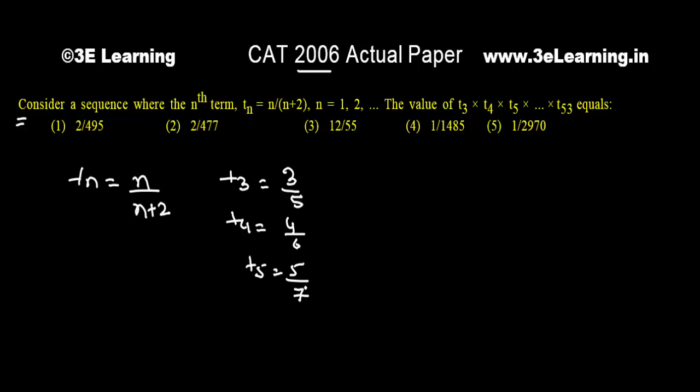So I solved this question: t3 is 3 upon 5, t4 is equal to 4 upon 6, t5 is equal to 5 upon 7, and then I know that would be 6 upon 8, dot dot dot.